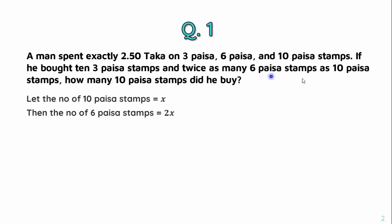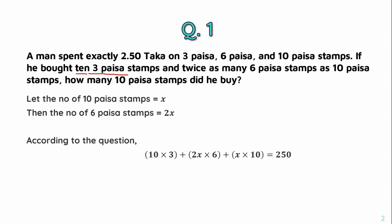According to the question, 3-pausa stamps: 10 times 3. Then 6-pausa stamp quantity is 2x. According to the question, 3-pausa stamp quantity is also noted. The 10-pausa stamp is x, so the value becomes 10x.